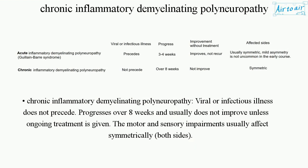Chronic inflammatory demyelinating polyneuropathy, by contrast, is not preceded by a viral or infectious illness. It progresses over eight weeks and usually does not improve unless ongoing treatment is given. The motor and sensory impairments usually affect both sides symmetrically.